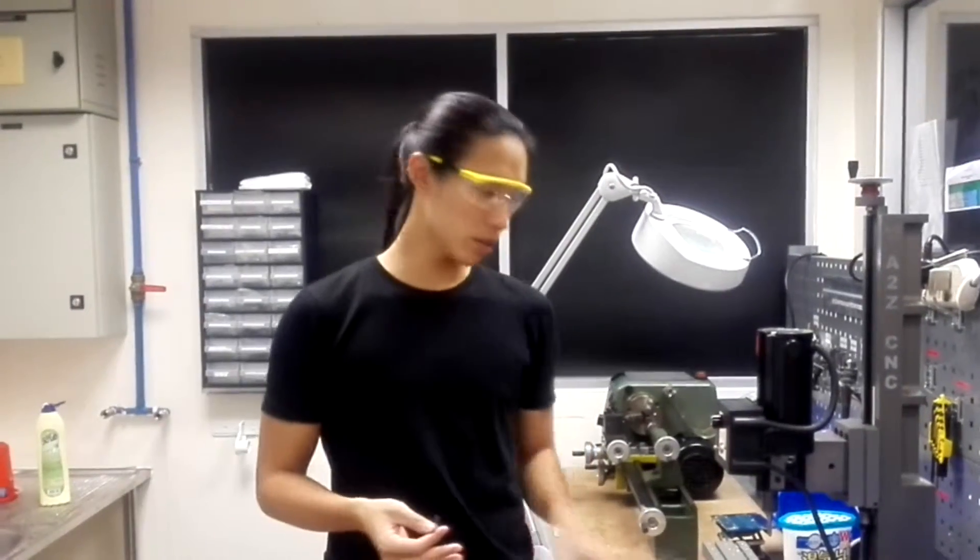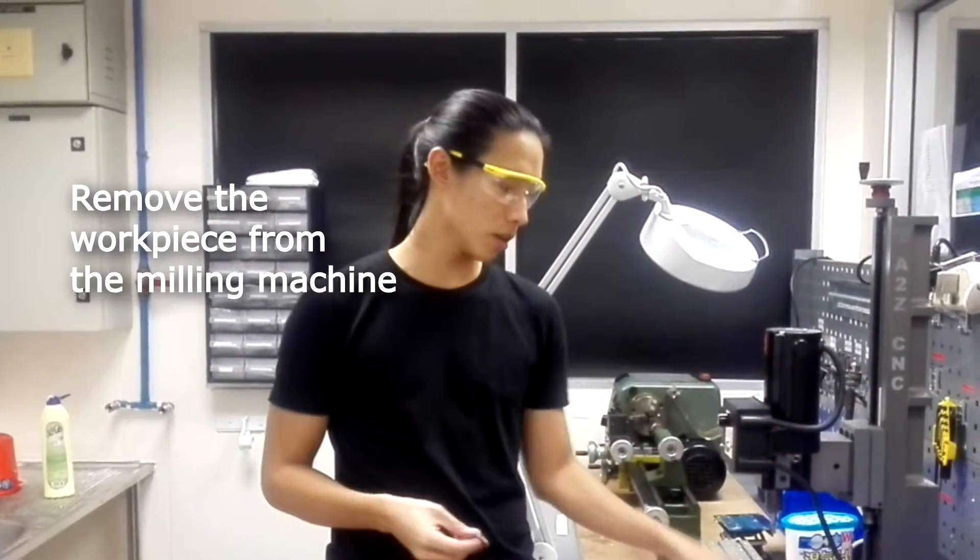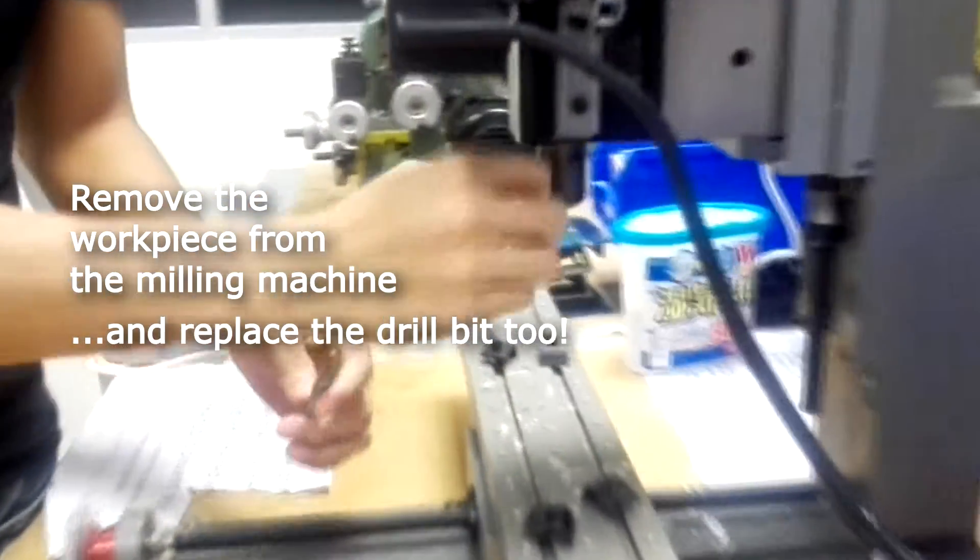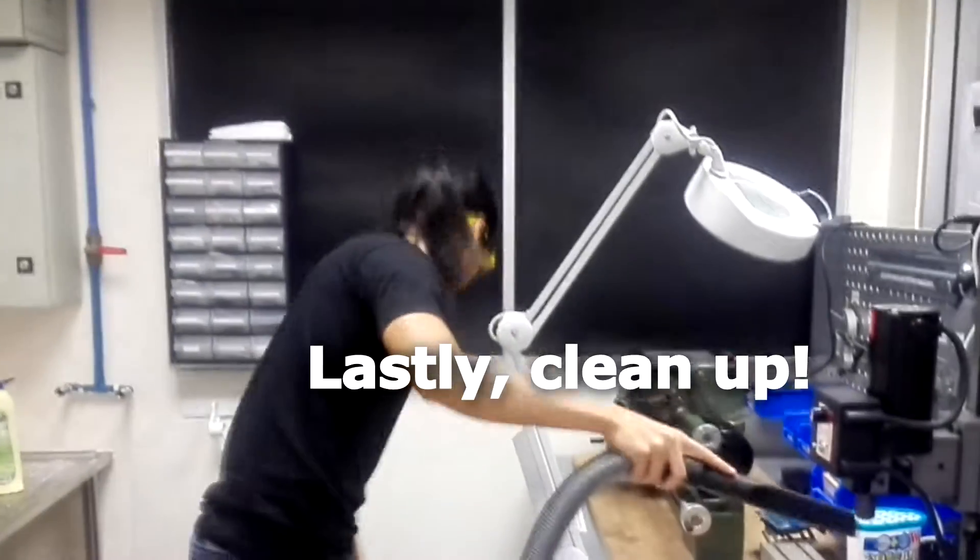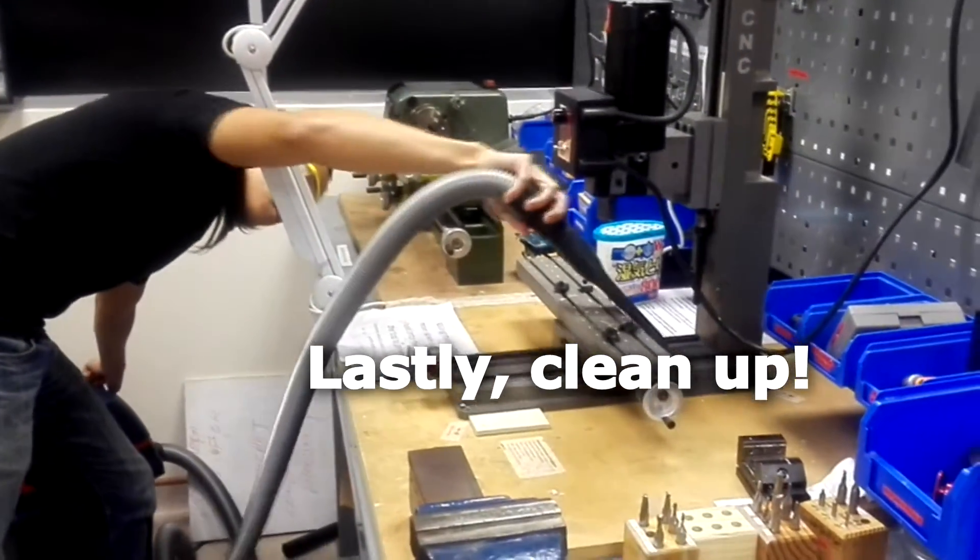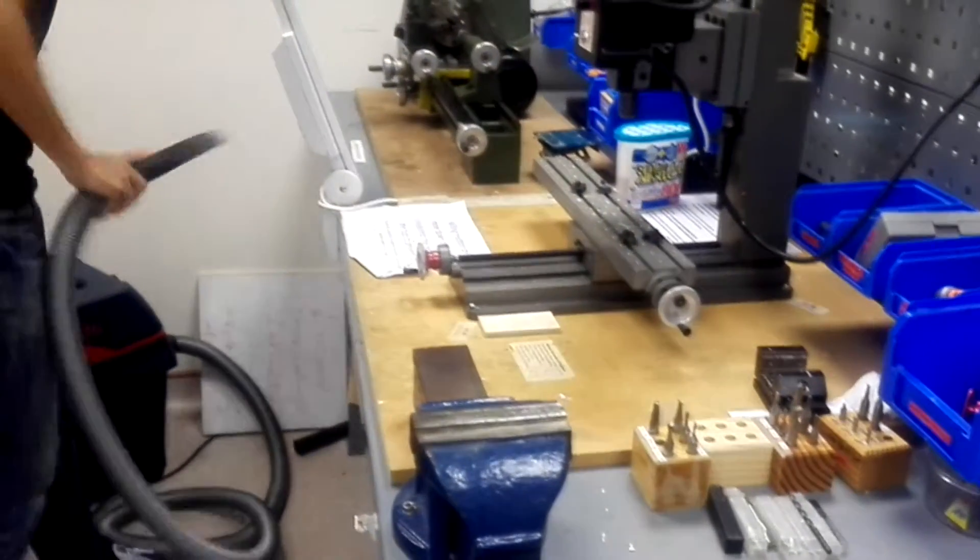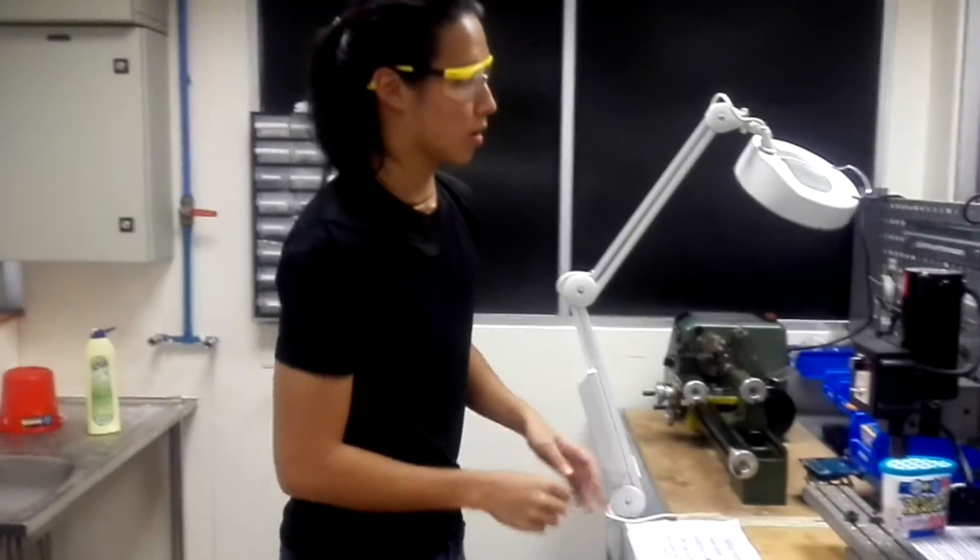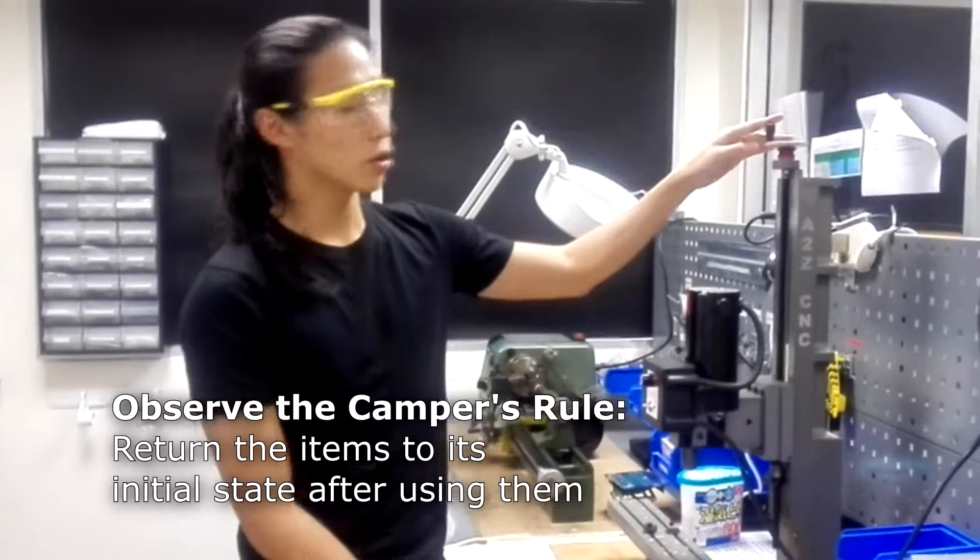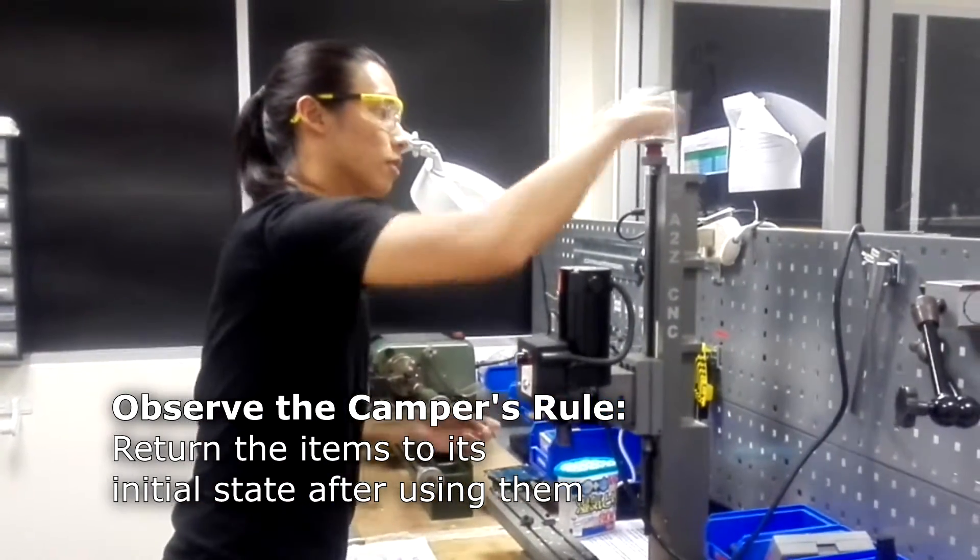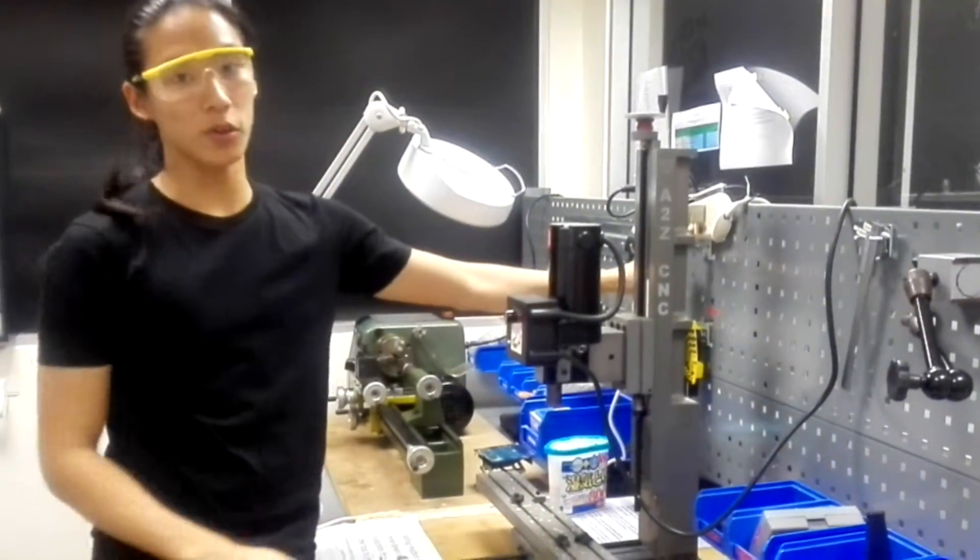After you're done working with your workpiece, remove your workpiece from the milling machine and remember to remove the drill bit as well. Replace the drill bit back into its holder and use the vacuum cleaner to vacuum up any shavings you have. Always remember to bring the z-axis up for the next user and remember to switch off the mains.